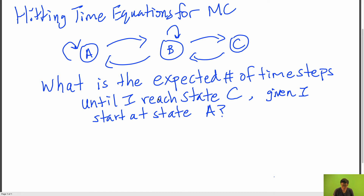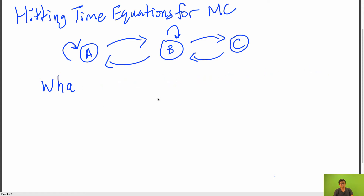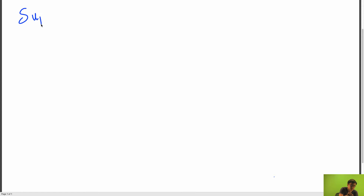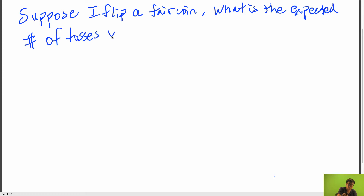Let's try to do an example. Suppose I flip a fair coin. What is the expected number of tosses until I get two heads in a row?